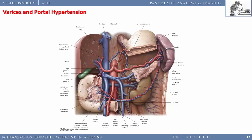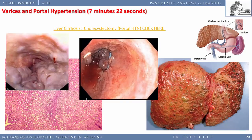Blood flow through the two portal capillary systems backs up in cirrhosis. A cirrhotic liver doesn't allow blood to flow through well, backing up through the portal vein. The splenic vein engorges, creating gastric and esophageal varices. Here are esophageal varices — big dilated veins in the esophagus that can bleed; people can bleed to death from them.